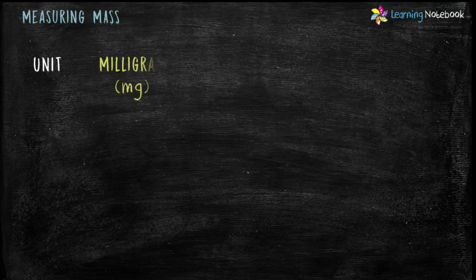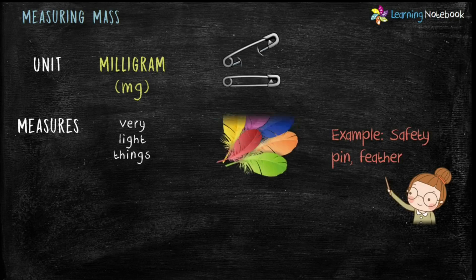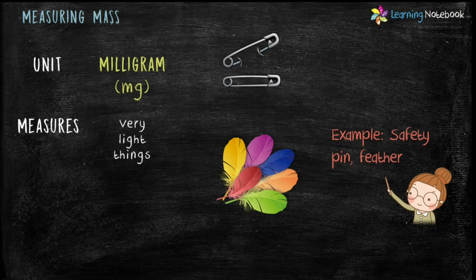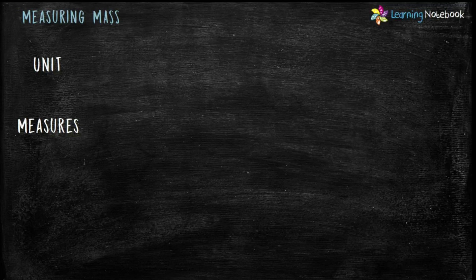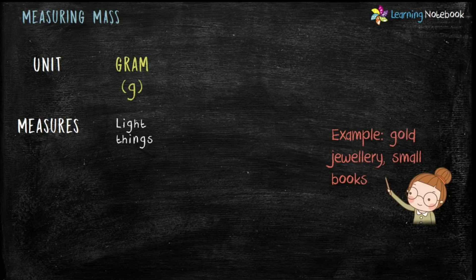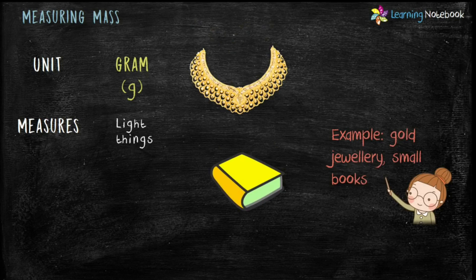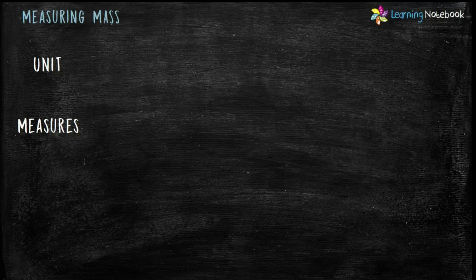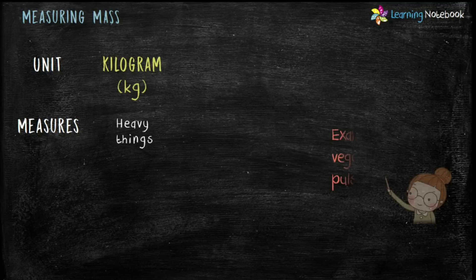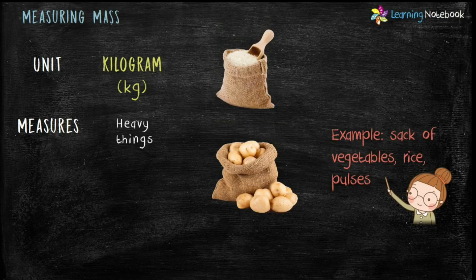Let's start with the units to measure mass. The first unit is milligram, denoted by mg, used to measure very light things — for example, safety pins and feathers. The second unit is gram, denoted by g, used to measure light things — for example, gold jewelry and small books. The third unit is kilogram, denoted by kg, used to measure heavy things like sacks of vegetables, rice, and pulses.